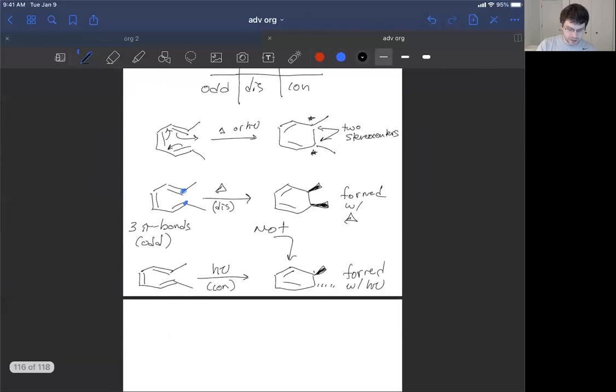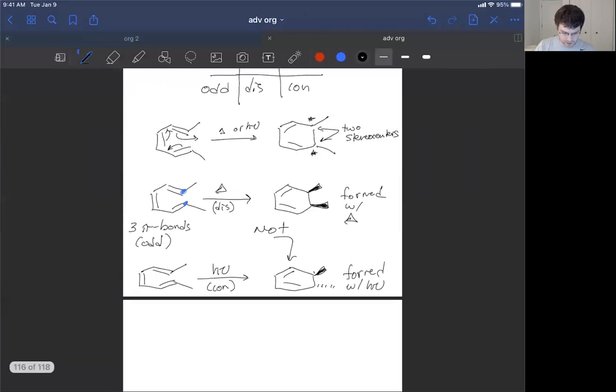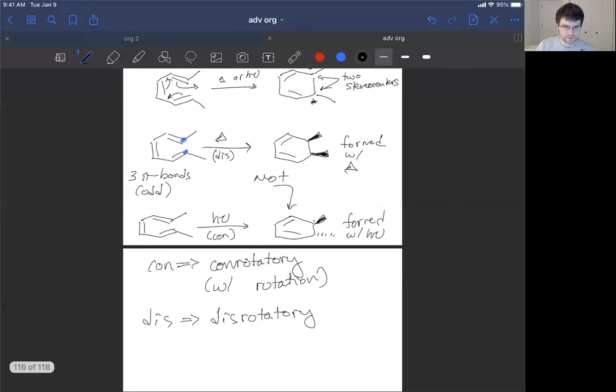So now what did con and dis stand for? That's worth reviewing. So con was conrotatory or with rotation. That is, they're working together, rotating together, rotating in the same direction, whereas dis stood for disrotatory, moving in opposite directions. Whereas even and odd are the number of double bonds.